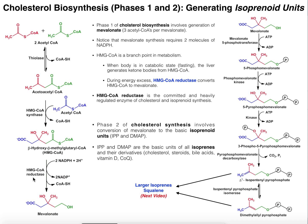HMG-CoA reductase is a very important enzyme. Not only is it heavily regulated, but it is also the target of statin medications. The initial first statin ever made, lovastatin, was found to be an inhibitor of this enzyme. Since statins are prescribed to reduce cholesterol synthesis, it makes sense that they target HMG-CoA reductase, because it is the committed and heavily regulated enzyme of cholesterol and isoprenoid synthesis. If you want to shut down cholesterol synthesis, you've got to shut down this enzyme. That concludes phase one — it gives us mevalonate.